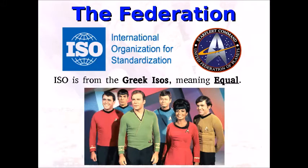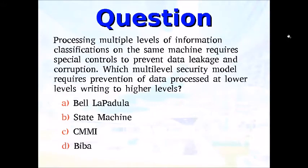So risk actually today means something like unforeseen danger. The ISO itself comes from a Greek word — it means equal. And it's a great thing about Star Trek that in the Federation you were treated as an equal. Now, processing multiple levels of information classifications on the same machine requires special controls to prevent data leakage and corruption. Which multi-level security model requires prevention of data processed at lower levels writing to higher levels?